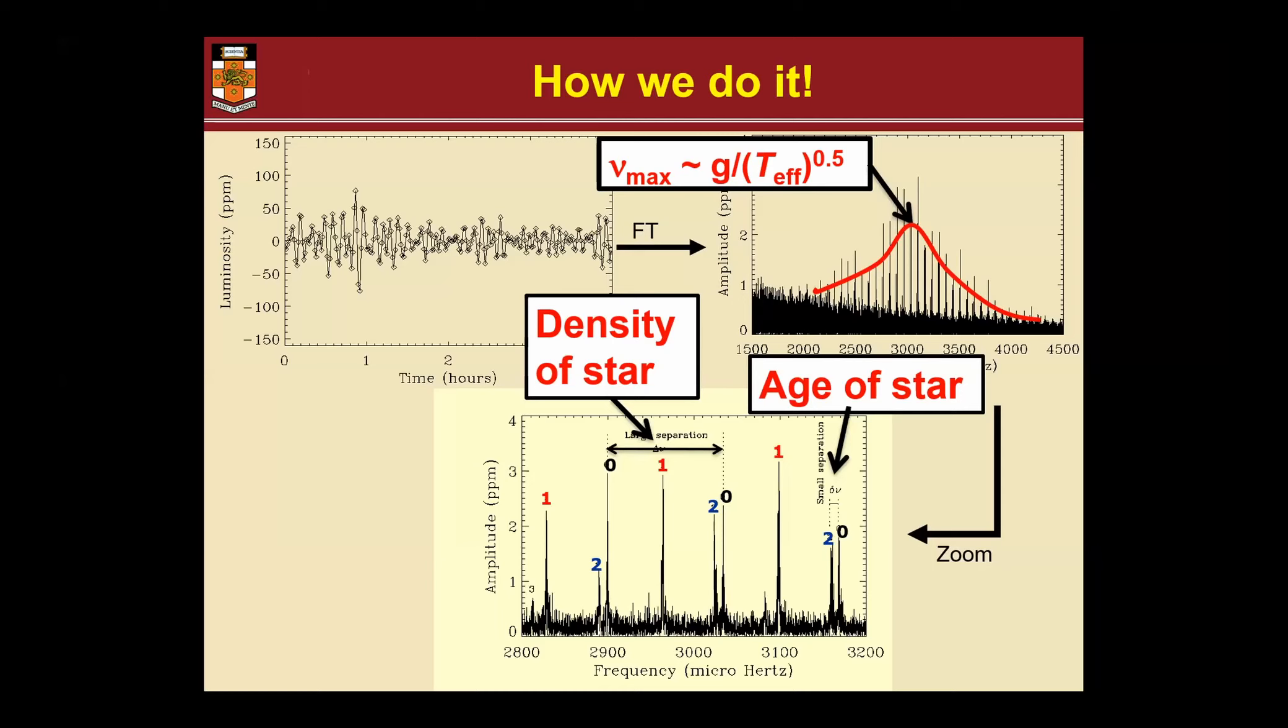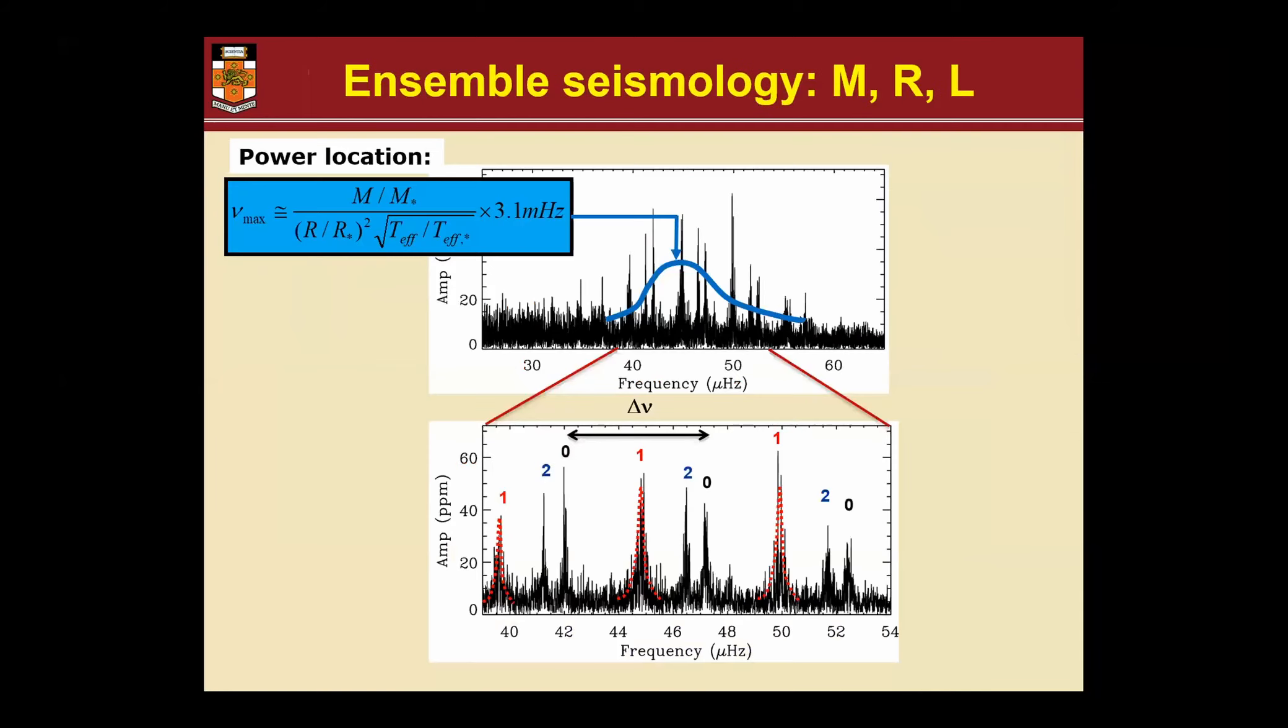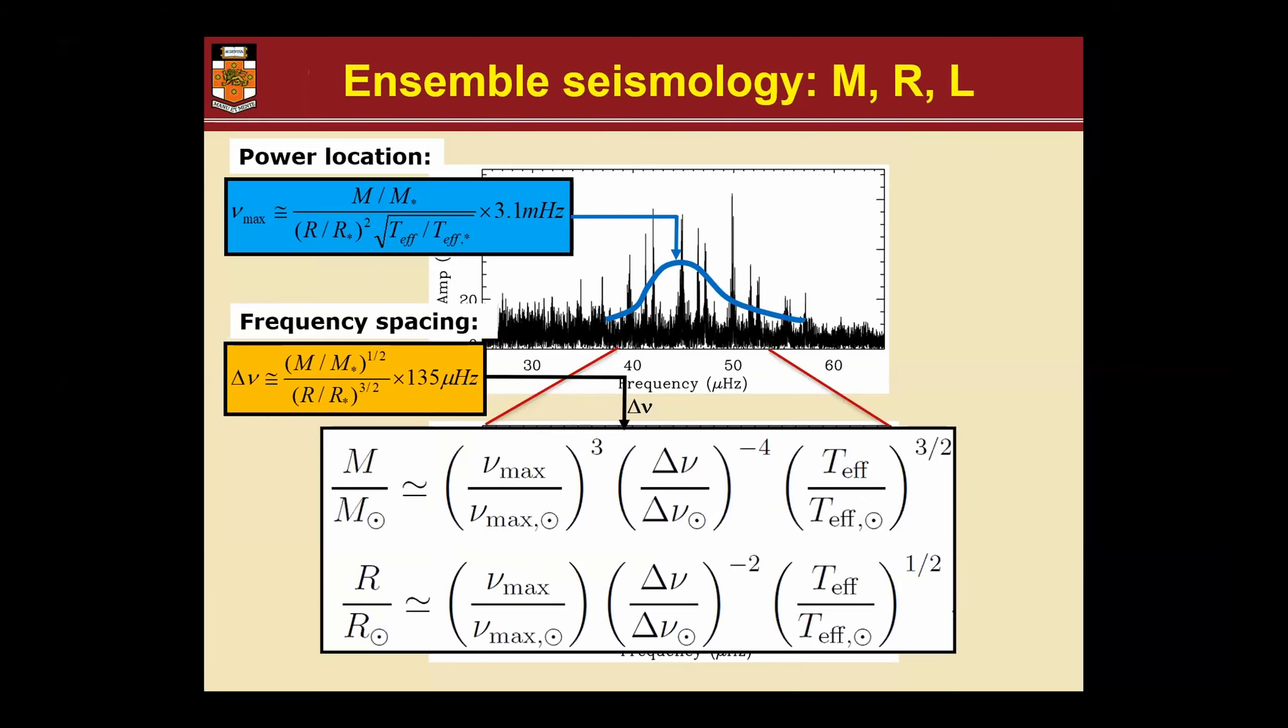Real asteroseismology, the world-called technique, is actually modeling each individual frequency - you take models and you create model frequencies and compare that to the data. But that is time consuming when you have thousands of stars, which I usually work with. Then we use an ensemble technique where we just focus on two frequencies: one is the nu max I already talked about, and the other one is mean density, the spacing between radial modes. Those two relations can be combined and give you mass and radius just like that, and they are fairly easy to measure.